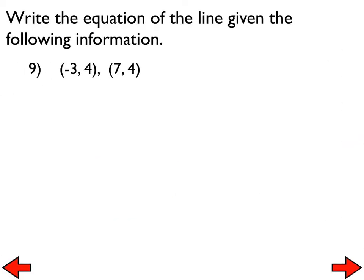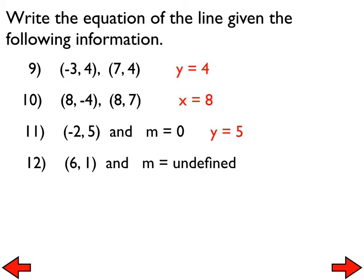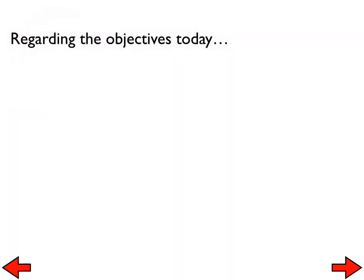Quick review: Number 9 — y equals 4. Number 10 — x equals 8. Number 11 — y equals 5; the slope given was 0 so it's a horizontal line. Number 12 — students identify the equation. That wraps up today's lesson.